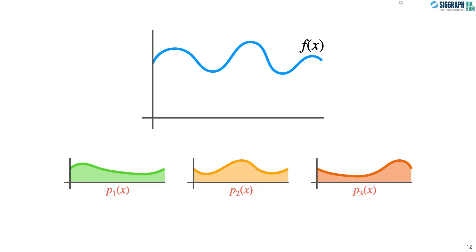But it can be difficult to design one technique that importance samples the entire integrand well. Instead, we can try to combine multiple techniques. For example, one that's good at sampling the left side, one that's good at the middle, and one that's good at sampling the right side. And so now the question is how do we combine them in a way that preserves the strengths of each technique?